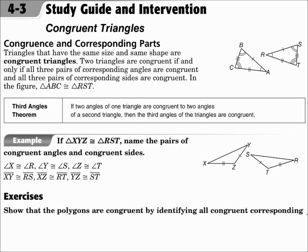When you say that they're congruent, make sure that the order that you put the letters in matches. So if I say triangle ABC is congruent to triangle RST, let's look at the order. A is first, and in the picture angle A has one arc. In the other triangle, the one arc is R, and that's why R comes first for the second triangle.